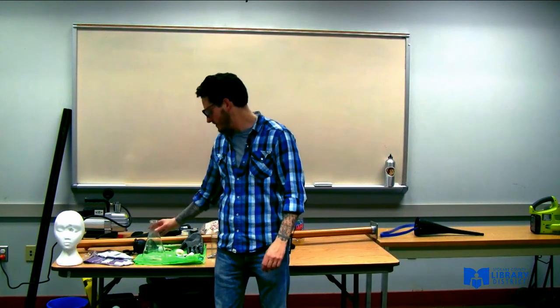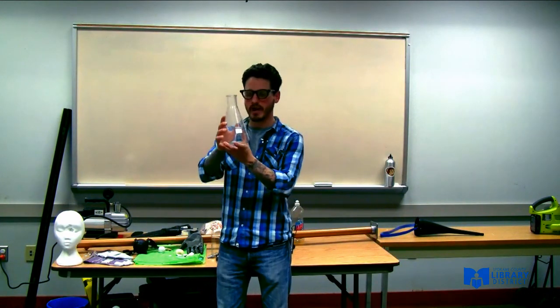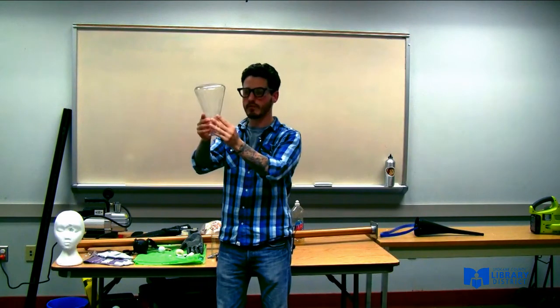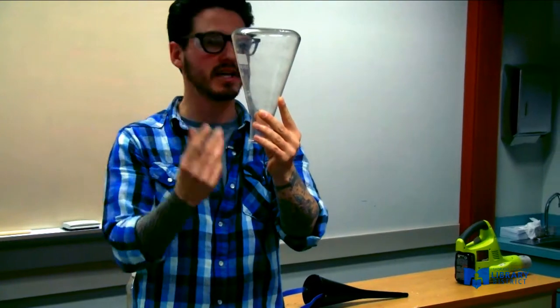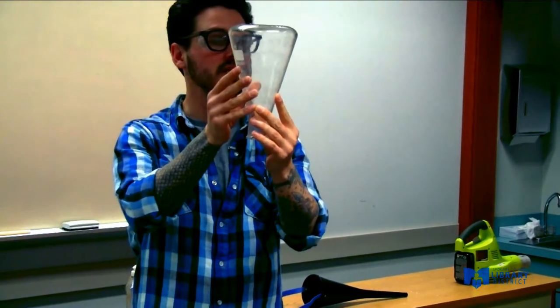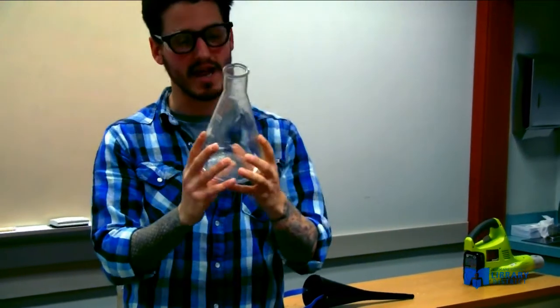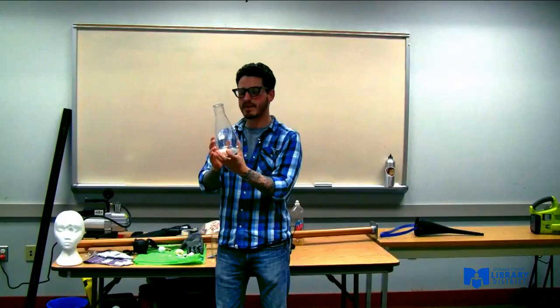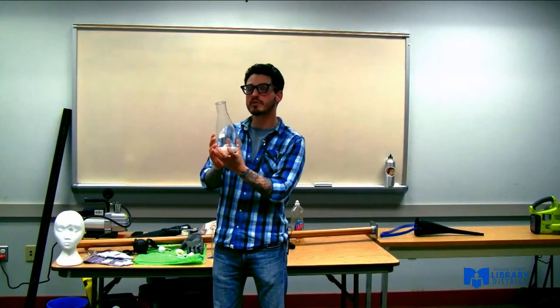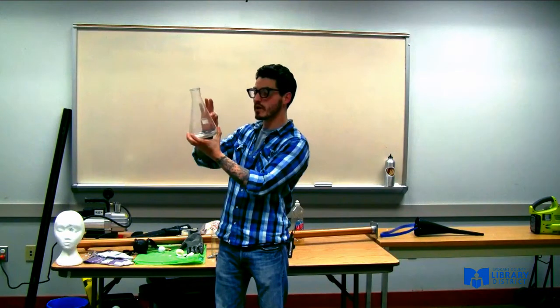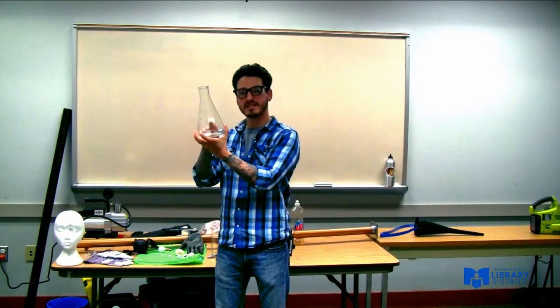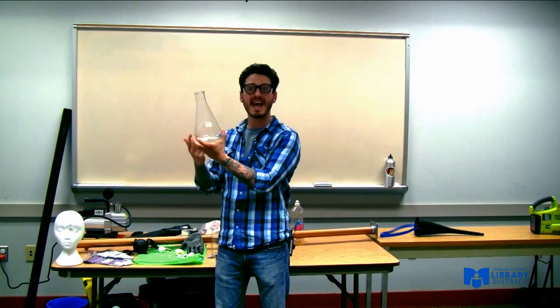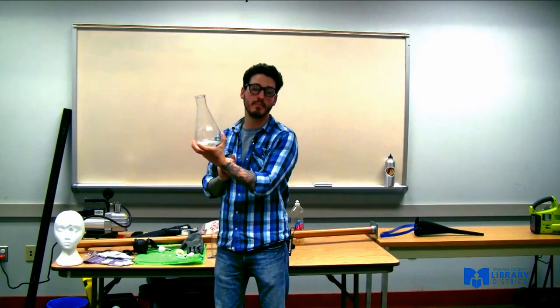So what we're going to do is, I have my bottle right here. Now my bottle actually right now is full. It's full of air. It has air on the inside pressing out, it has air on the outside pressing in. Now it may not seem like it but the weight of air is about 14.7 pounds per square inch. So for every square inch on the bottle, there's 14.7 pounds pressing in. But on the inside, there's air pressing out at exactly 14.7 pounds.